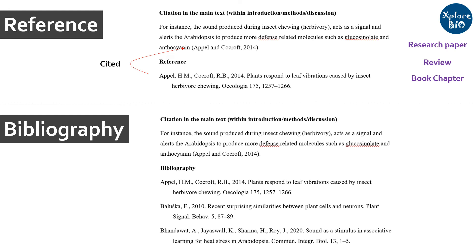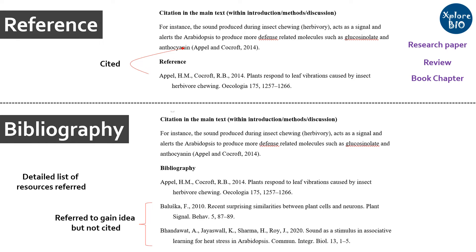Bibliography, on the other hand, is a more detailed list of literature or sources that you referred to or used to generate ideas about the topic, whether or not the work has been cited in the main text. Bibliography is provided at the end of a thesis or dissertation.